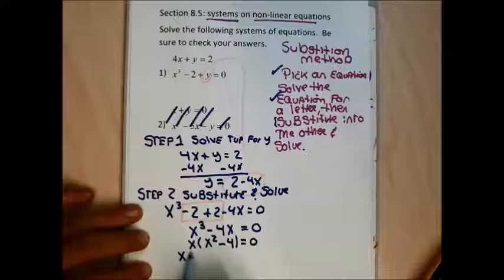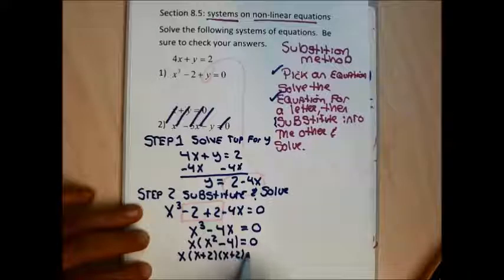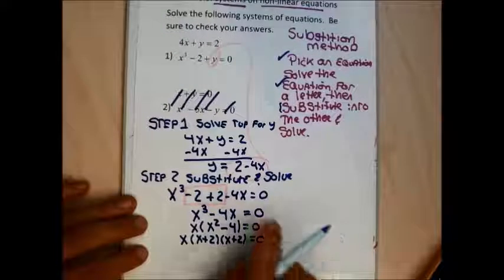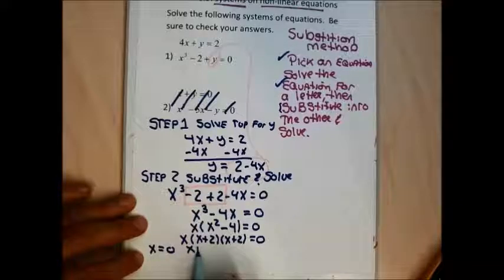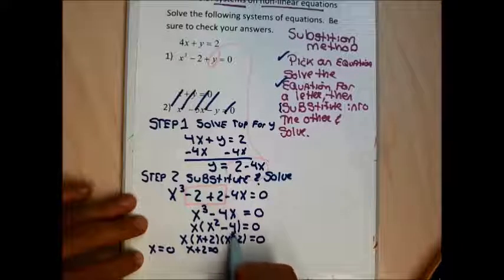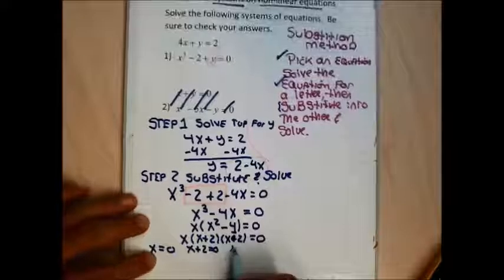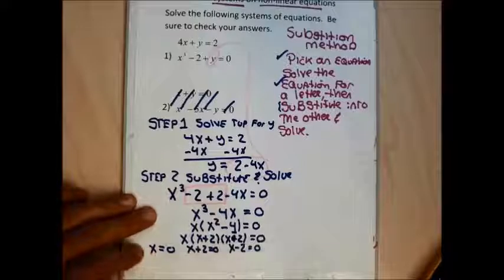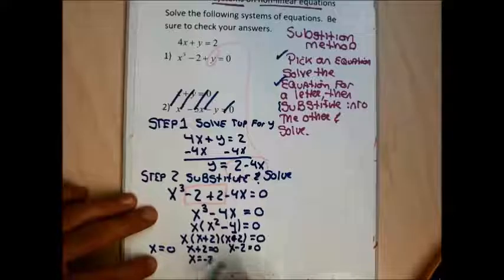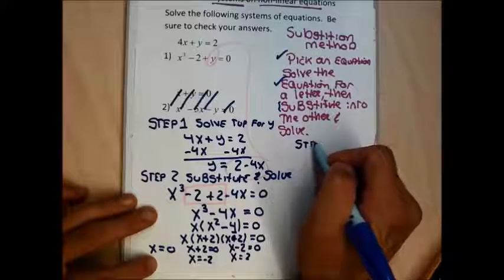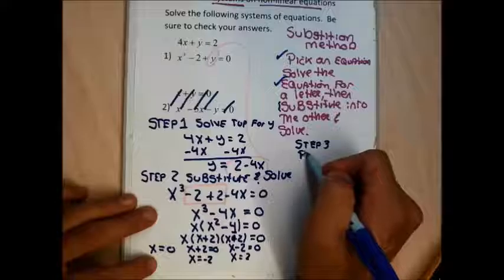I'm going to factor this even more. That x² − 4 also factors to (x + 2)(x − 2). So I have x(x + 2)(x − 2) = 0. I'll set each factor equal to zero — any factor with an x gives a solution. Setting x = 0, x + 2 = 0 gives x = −2, and x − 2 = 0 gives x = 2. I now have three x-values.